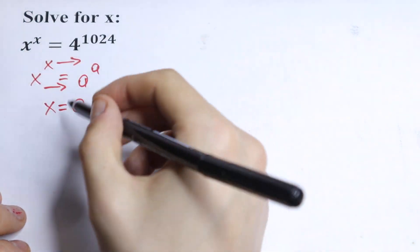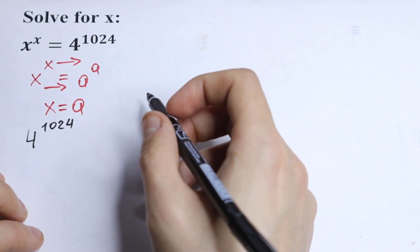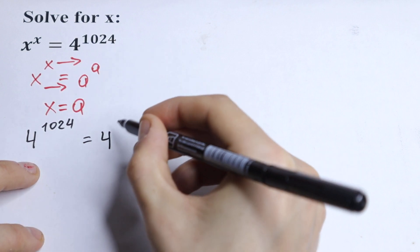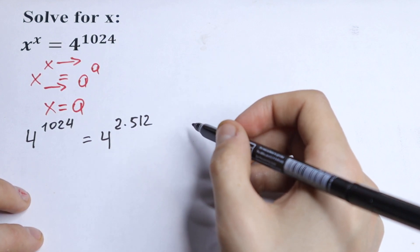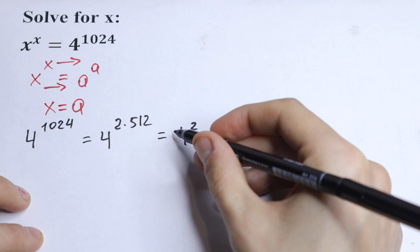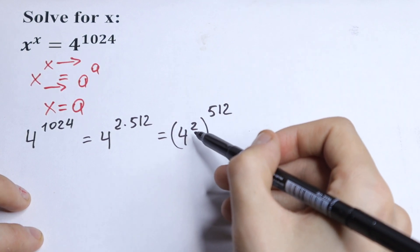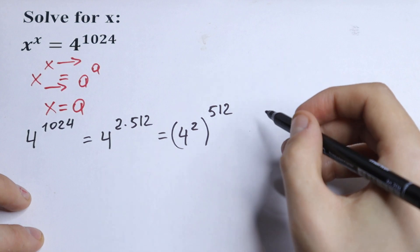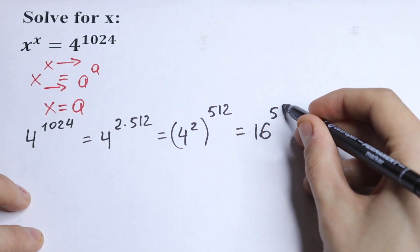So first of all, we have 4 to the power 1024. Let's simplify this a little bit. We can write 1024 as 2 times 512. We can move that 2 next to the 4, and all raised to the power 512. Then we multiply our powers: raising 4 to the second power gives us 16 to the power 512.